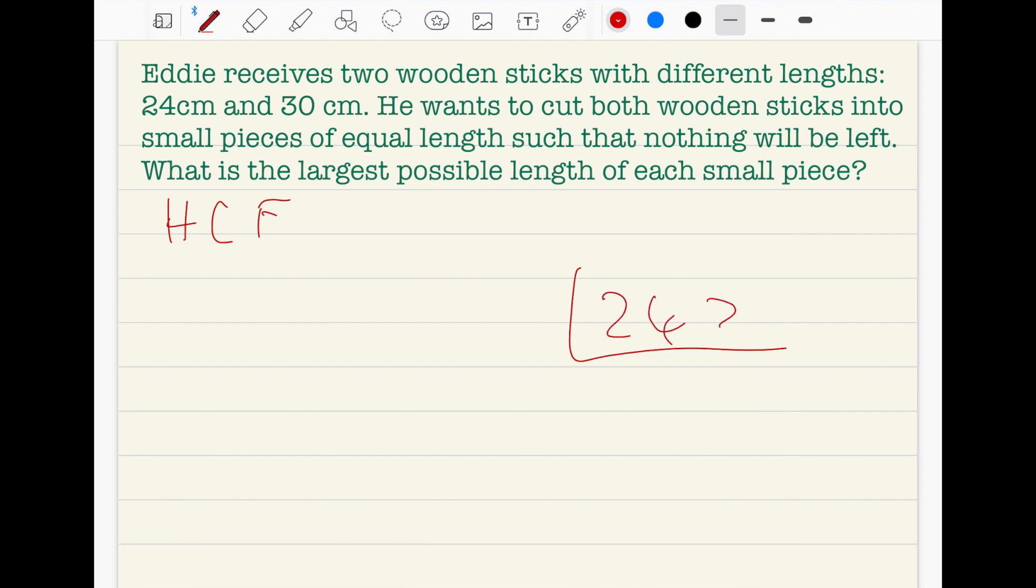Let's think - what can they be divided by? They can be divided by two because those two are even numbers. 24 divided by two is 12, and 30 divided by two is 15.